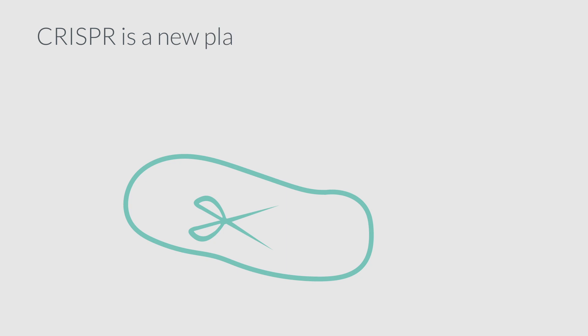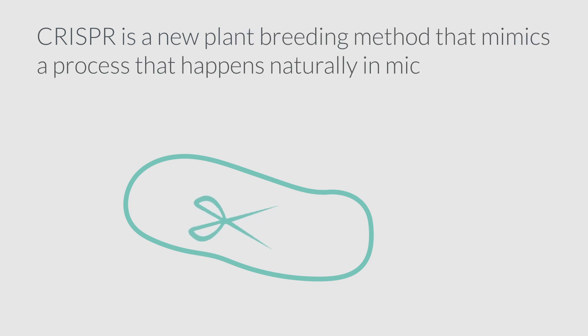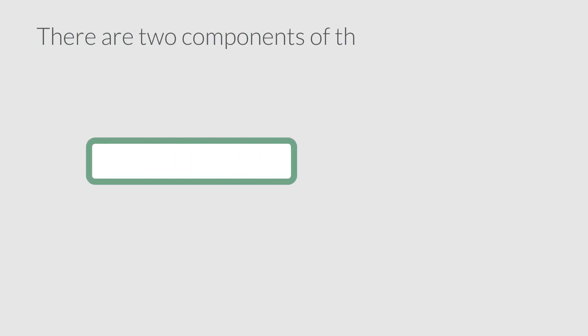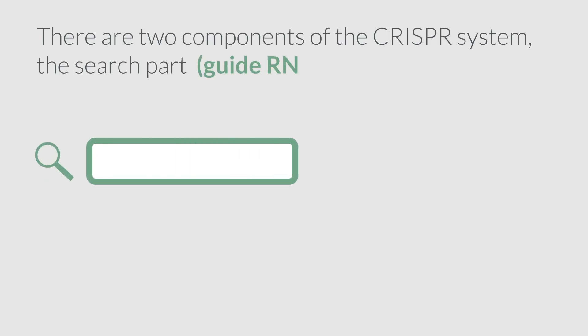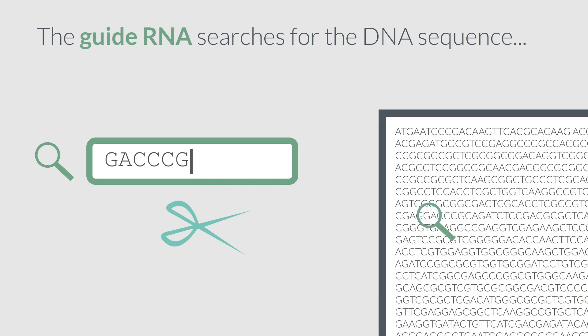CRISPR is a new plant breeding method that mimics a process that happens naturally in microbes. There are two components of the CRISPR system: the search part — guide RNA — and Cas9. The guide RNA searches for the DNA sequence, and Cas9 cuts the DNA.